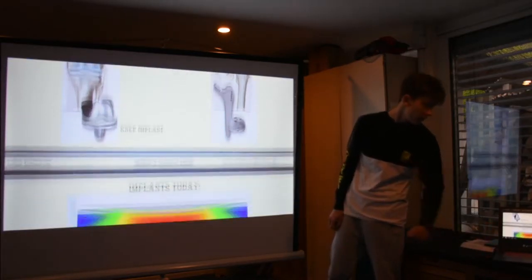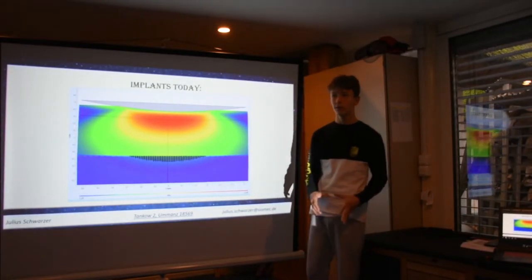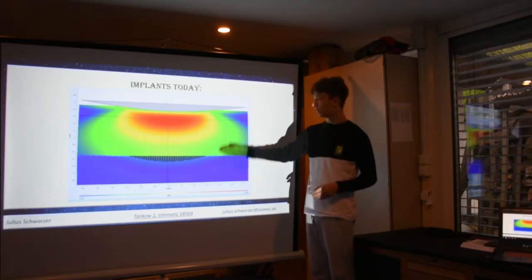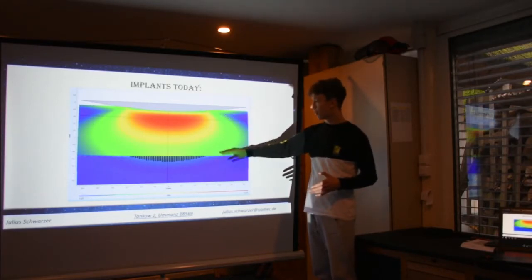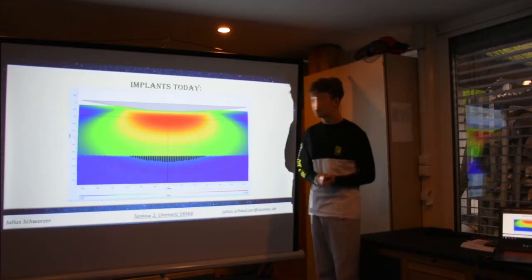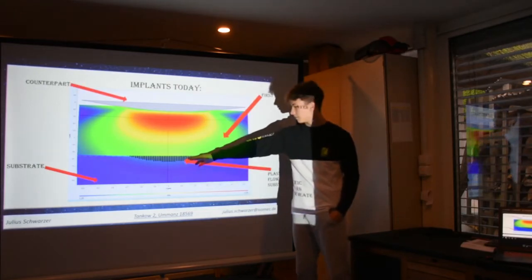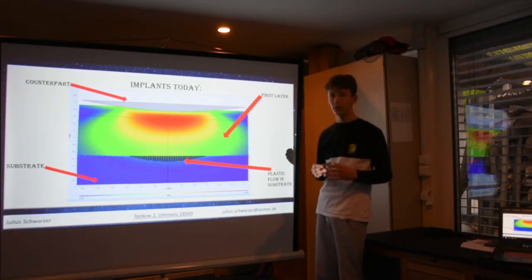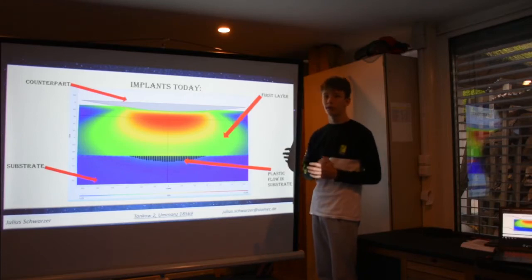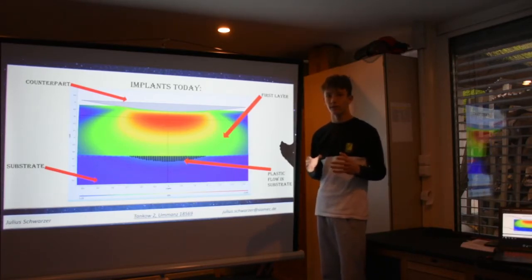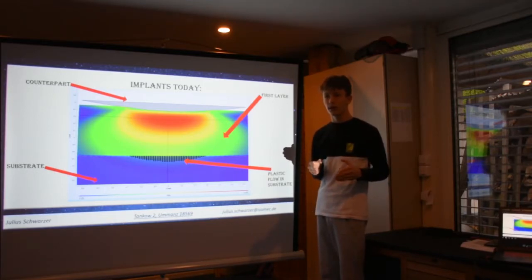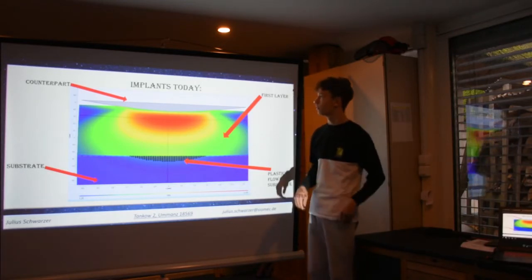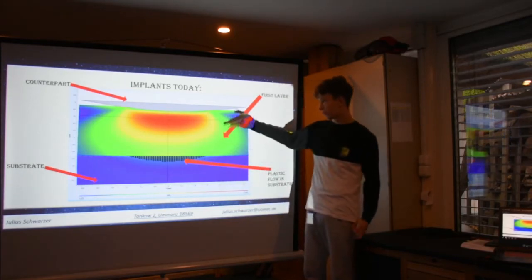Now, we had a problem because we talked about how implants are built and what they look like. They are made with one layer and a substrate underneath. The problem is plastic flow down in the substrate. When a counterpart presses on our implant, plastic flow starts to occur in the substrate — but not always. In our last video we talked about why that is and how we can stop it.